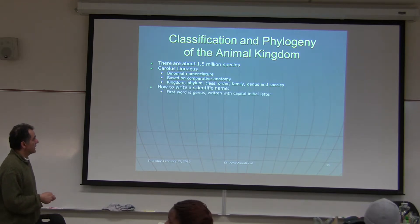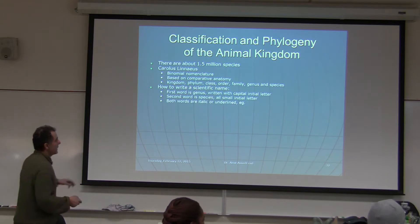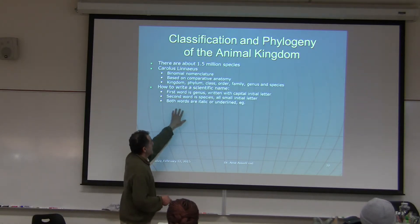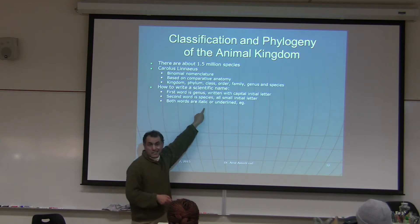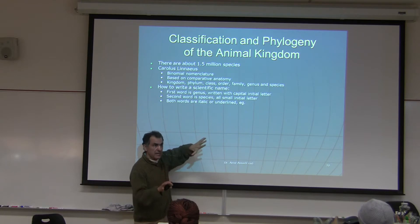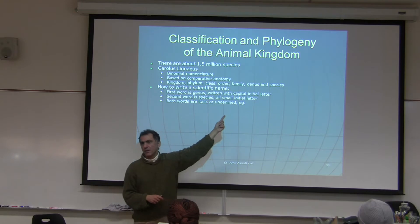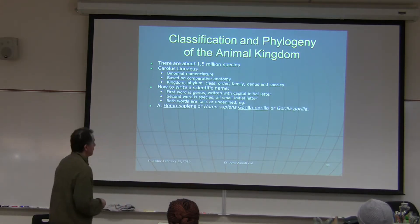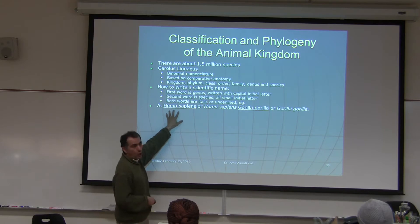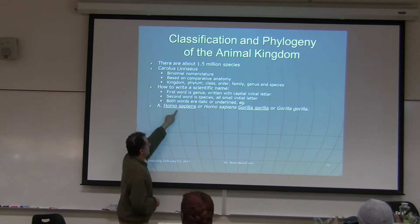How to write a scientific name: the first word is the genus with an initial capital letter, and the second word is the species in all small letters. For example, the scientific name for a human is Homo sapiens — capital H, small s. You're expected to write it this way on the exam.